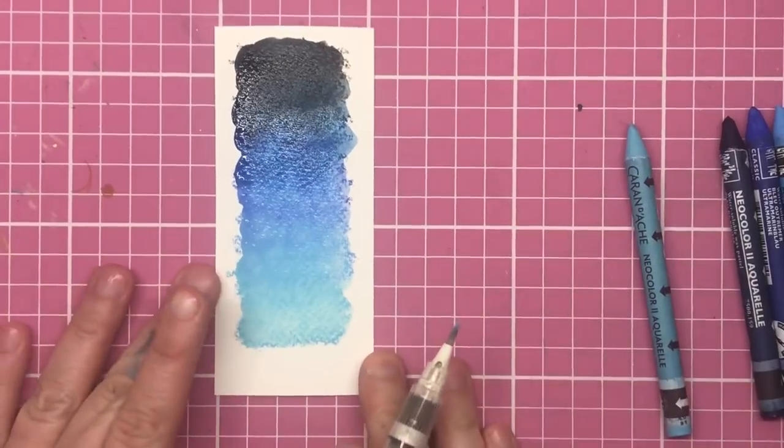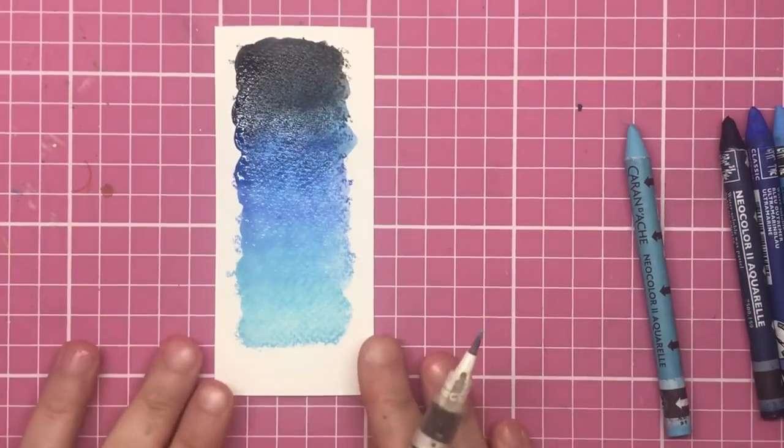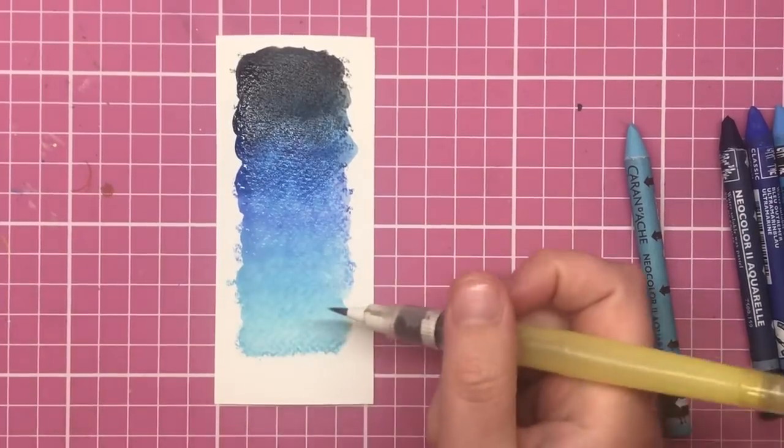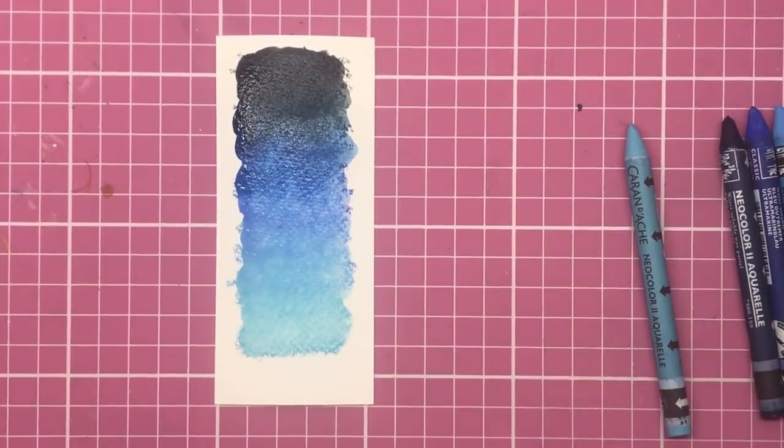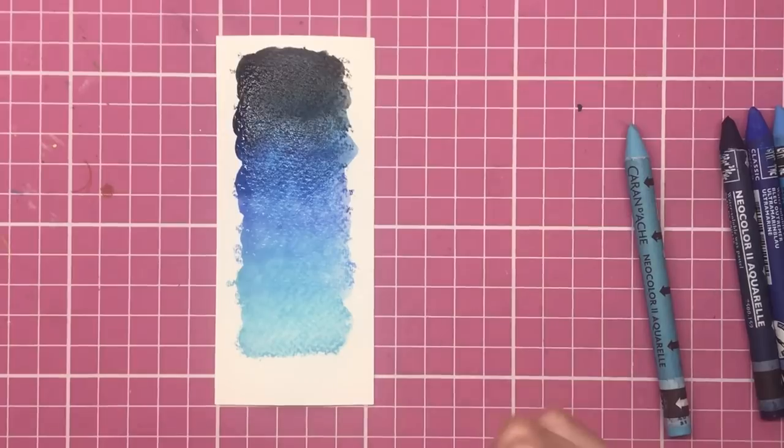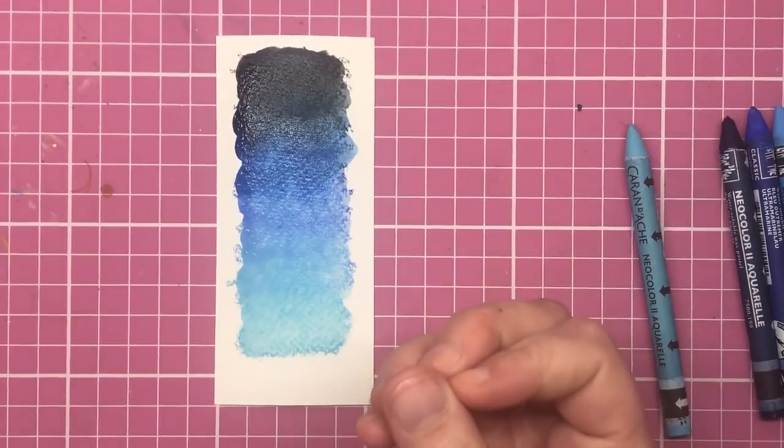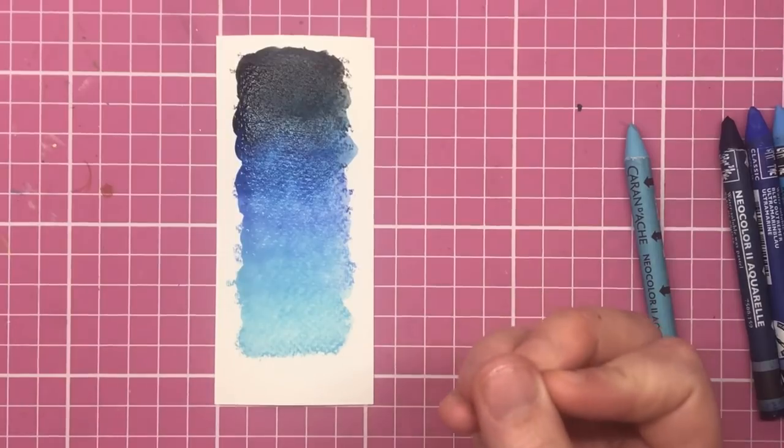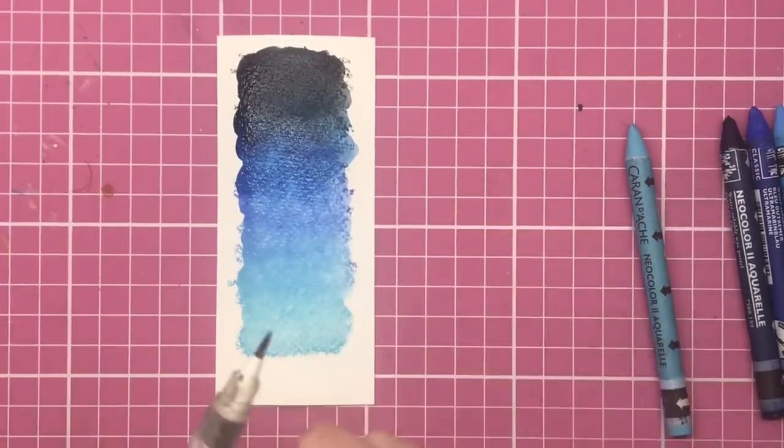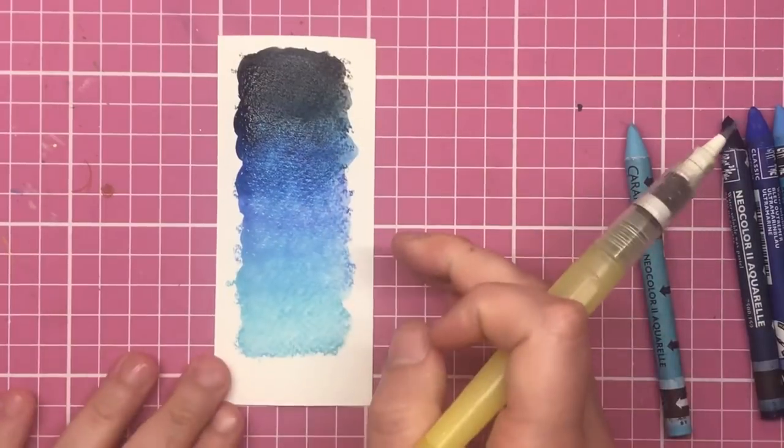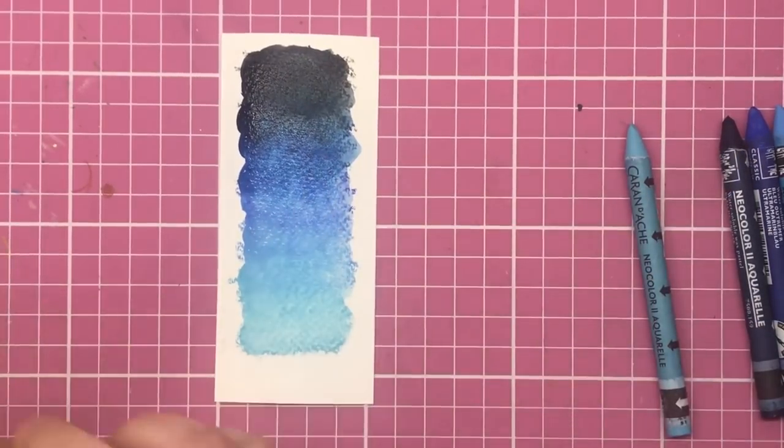So now you've got the first layer of Neo colour down with the crayon to paper technique. It's still looking really patchy and that was the main concern I had from people, that they could not get their Neo colours to look as saturated and as opaque as mine. It just kind of left this look of some white and some darker areas and just not as completely opaque as they would have liked it to be.